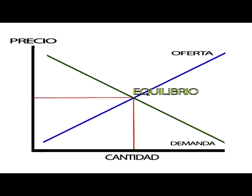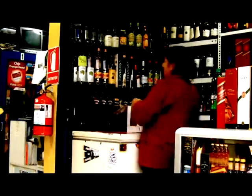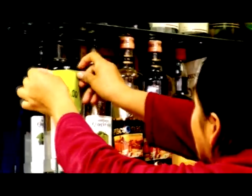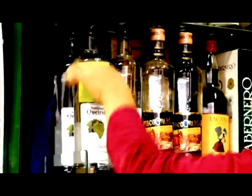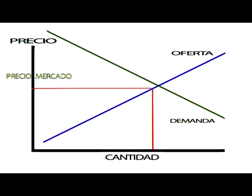Ese punto de equilibrio es el precio al que los consumidores están dispuestos a comprar el bien. Si, por ejemplo, la demanda baja, se producirá un desequilibrio en el que la cantidad demandada es menor a la cantidad ofertada y se producirá un reajuste terminando en una reducción del precio. Lo mismo se observaría para el caso opuesto, en que la demanda aumentase.